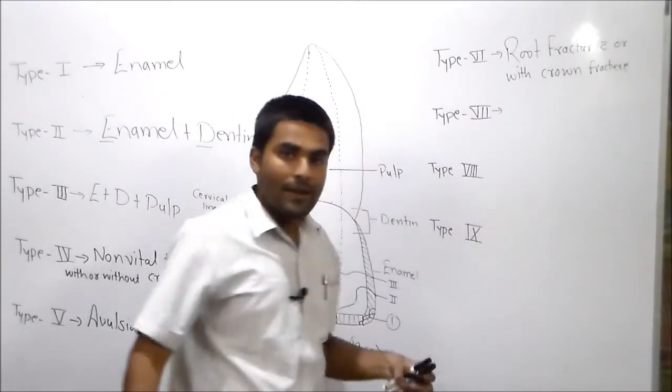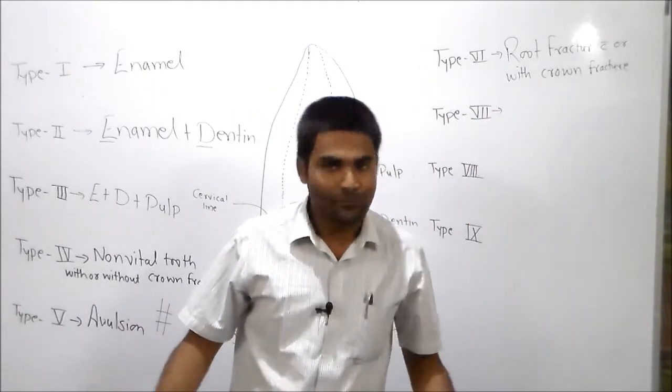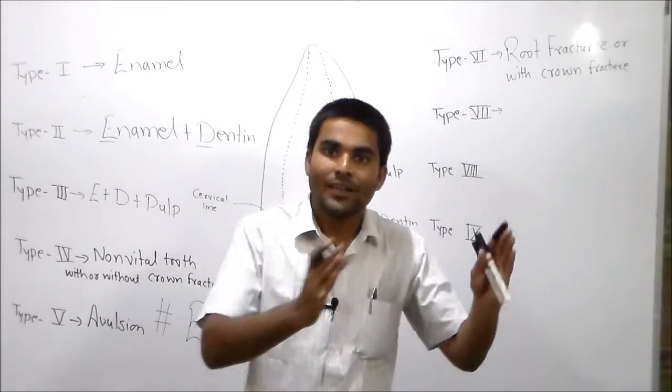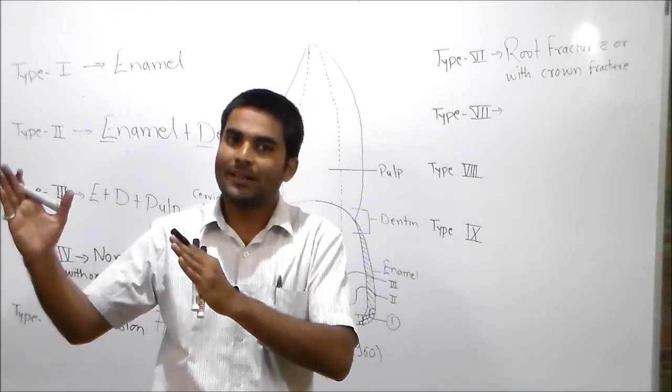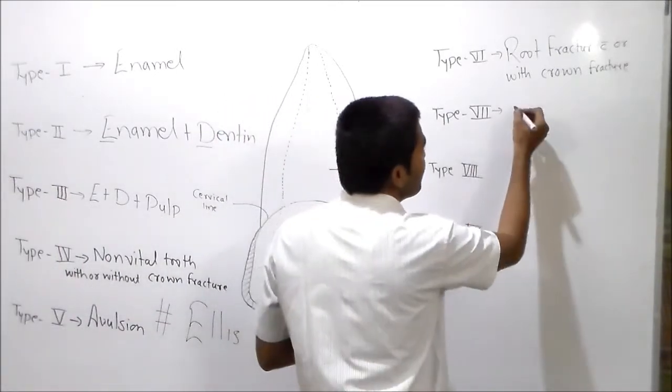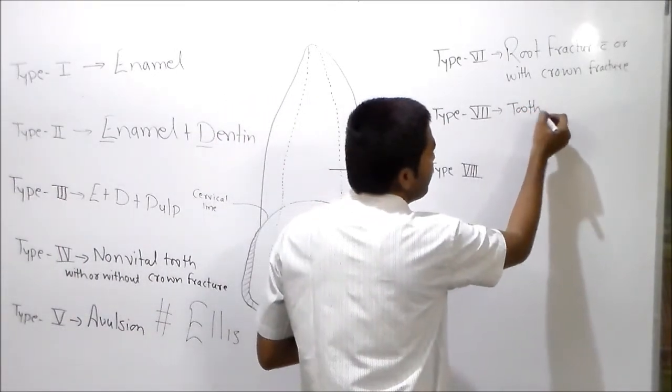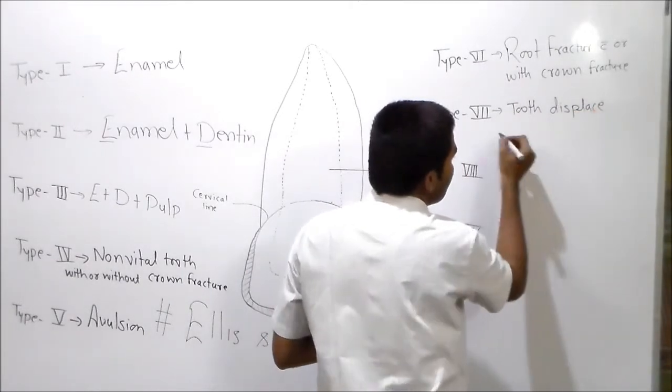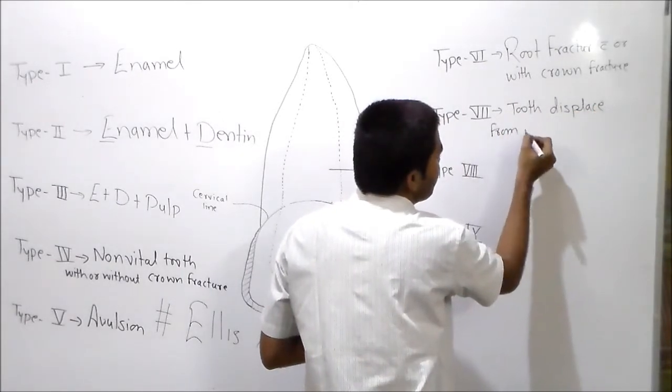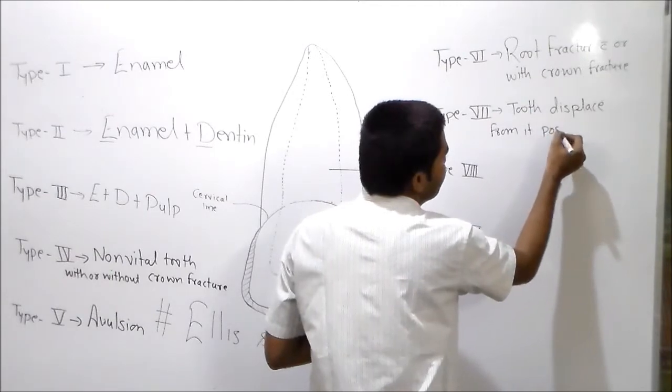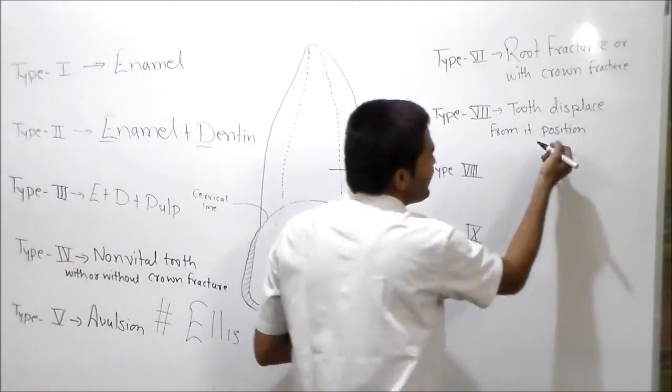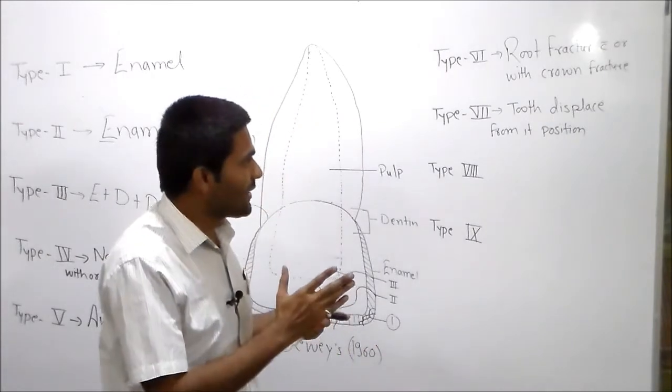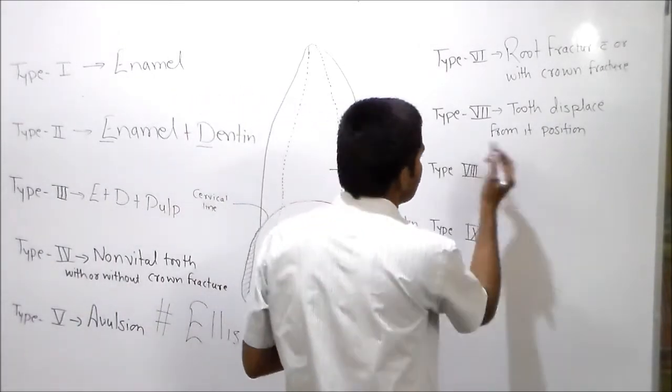Now class 7, crown fracture with root fracture. Now what do we do? We will shift to midline. Tooth displacement, tooth displaced from its position, which will be the original position. This will be displaced.